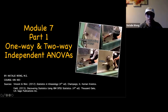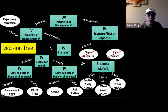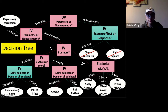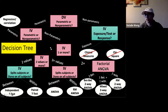Let's look at our decision tree. This week we're focusing on these red pathways. We've got a good chunk of our tests out of the way — five total for this semester. You guys did four: correlations, regressions, and t-tests. What we've got left are our one-way ANOVAs and then our two-way ANOVAs, which are also referred to as factorial ANOVAs.